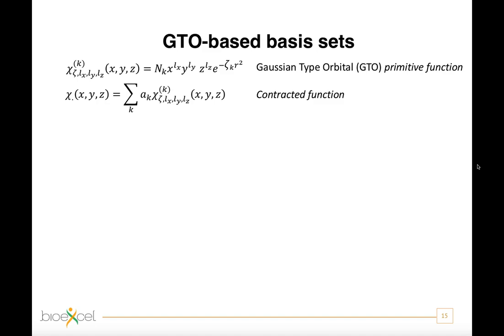However, nowadays, a more common and computationally efficient choice is to use the Gaussian type functions. This primitive function resembles less an orbital solution of the atomic Schrödinger equation.